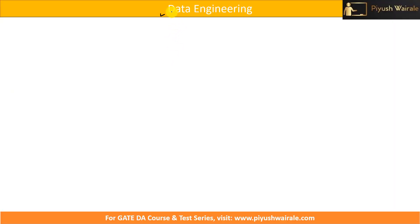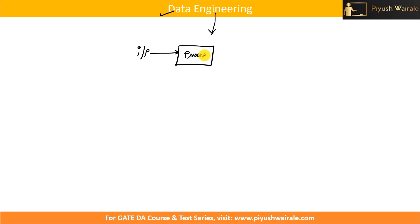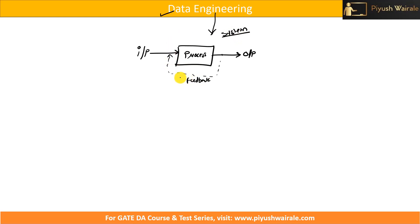Let us discuss what is data engineering. We have data and we have engineering. What do you understand by engineering? If I say I have one system — there is input, there is some process or activity, and there is some output — this entire system is engineering. In some cases we have a feedback system also. This system of input, process, and output represents the entire engineering concept.